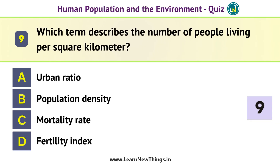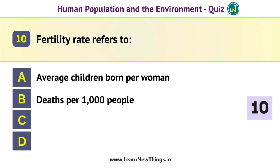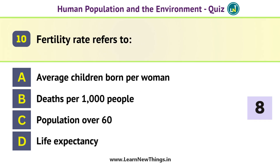Which term describes the number of people living per square kilometer? Population density. Fertility rate refers to the average number of children born per woman.